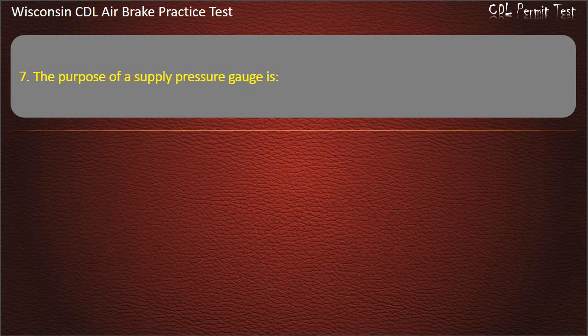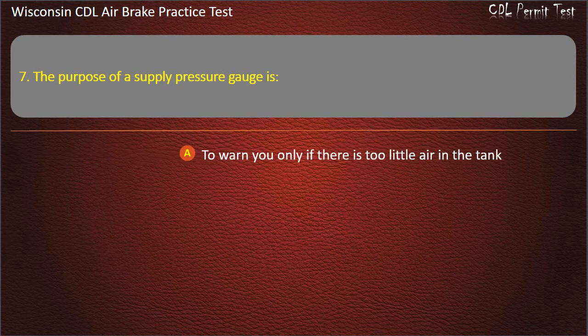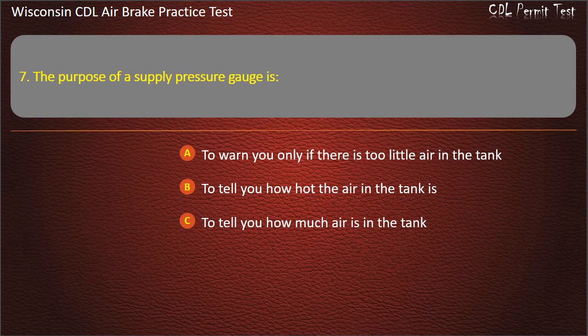Question 7. The purpose of an air pressure gauge is: To warn you only if there is too little air in the tank. To tell you how hot the air in the tank is. To tell you how much air is in the tank. All of the above.